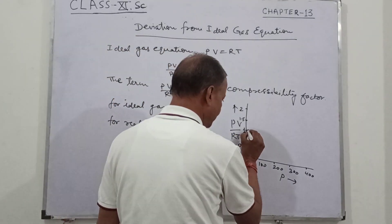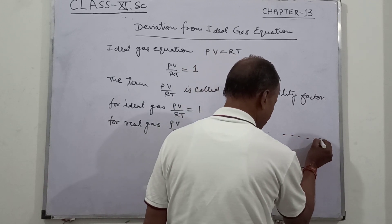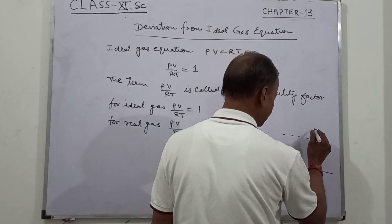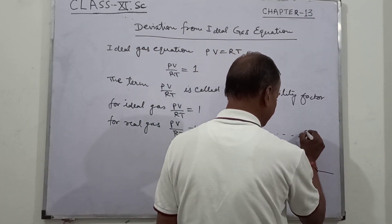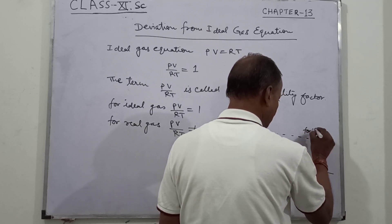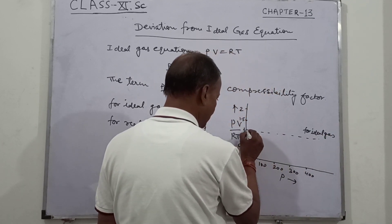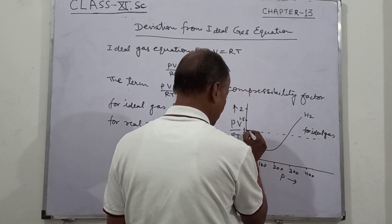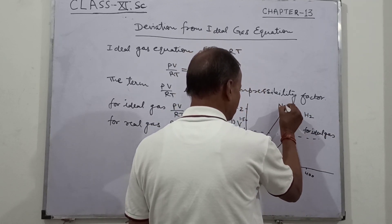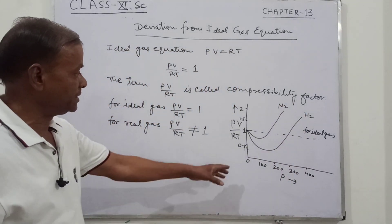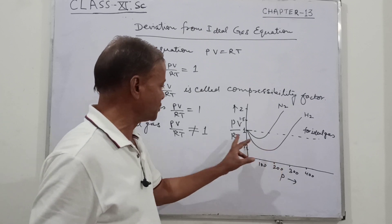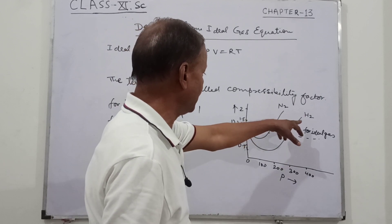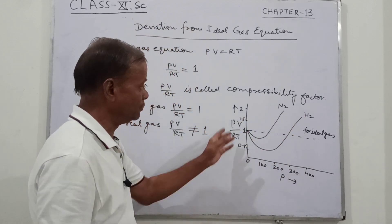For an ideal gas, PV upon RT is a straight line parallel to the P-axis at value 1. For real gases such as hydrogen and nitrogen, PV upon RT is not a straight line — it deviates from the ideal case.